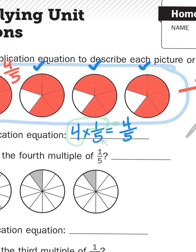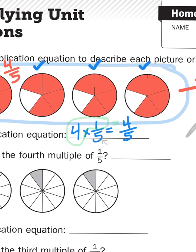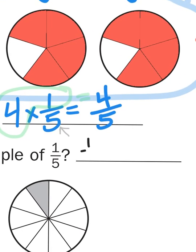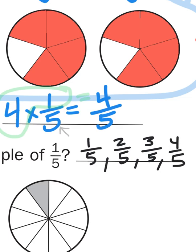So, what is the fourth multiple of one-fifth? Well, it's a little redundant, but the fourth multiple is four-fifths. If I were to write out the multiples in order, I'd have one-fifth, two-fifths, three-fifths, four-fifths. This is the fourth number in a row. It's my fourth multiple, four-fifths. So, these two answers are the same.